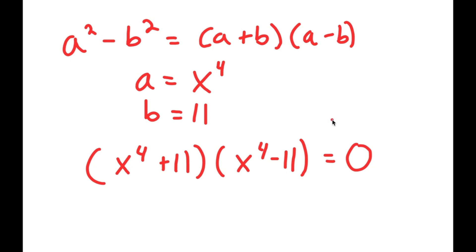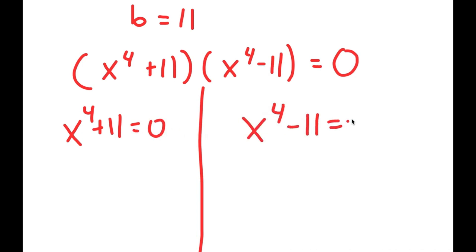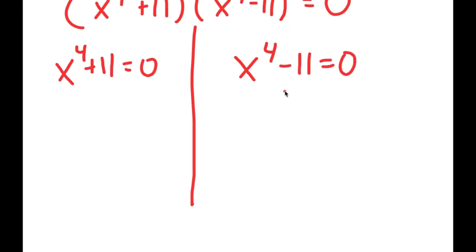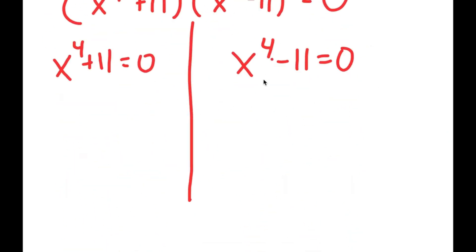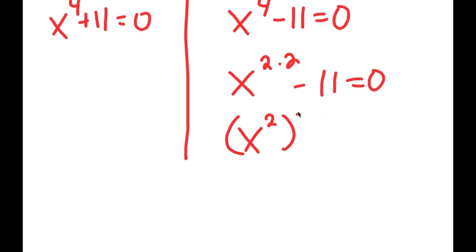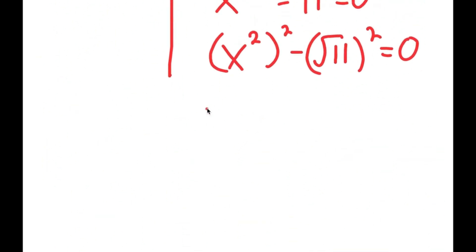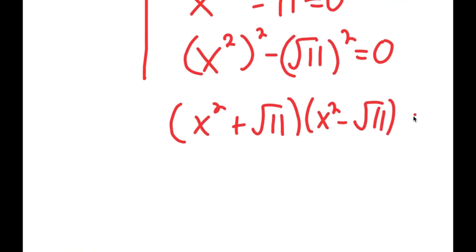From here I get two equations: x to the power of 4 plus 11 equals 0, and x to the power of 4 minus 11 equals 0. We are still not done yet, because to solve these equations we're going to do the same thing we did with the original equation. I'm going to rewrite x to the power of 4 as x to the power of 2 times 2, which equals x to the power of 2 to the power of 2. And 11 I'll rewrite as the square root of 11 squared, so I can use the difference of squares property again.